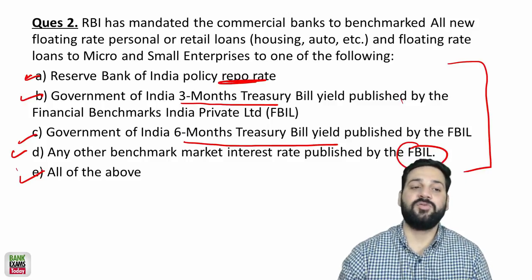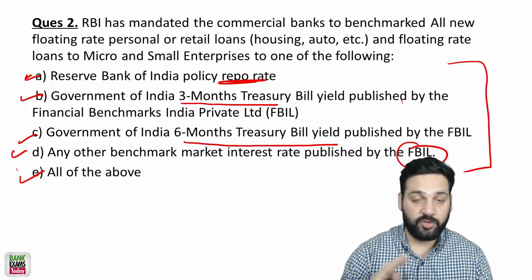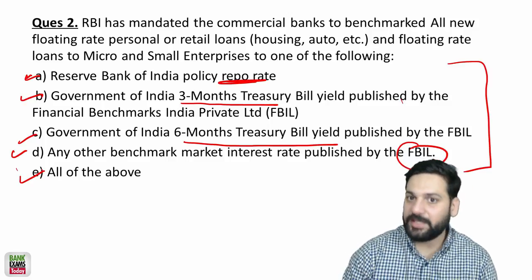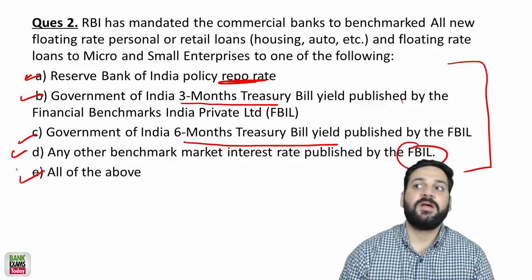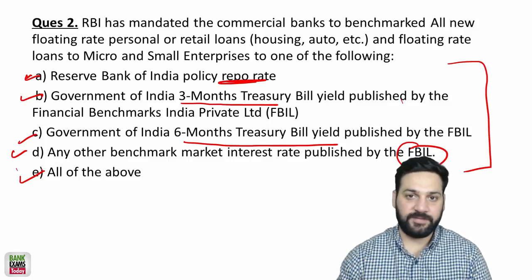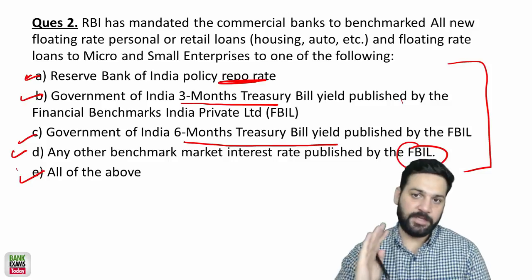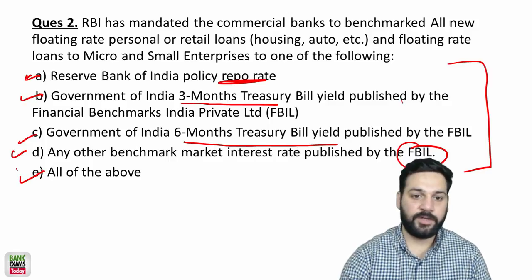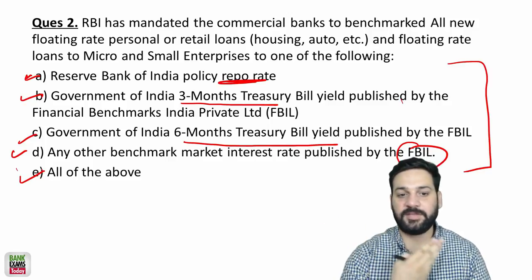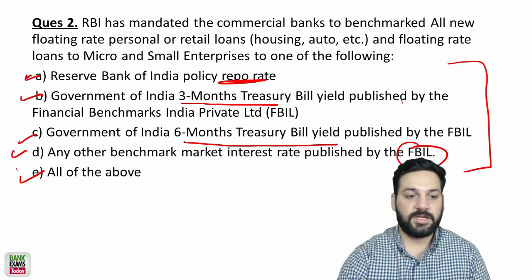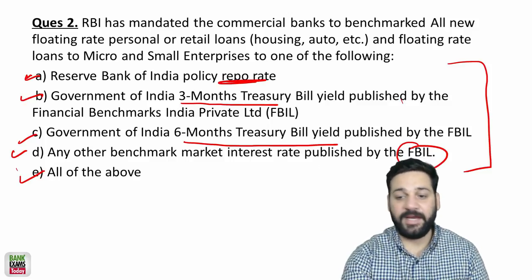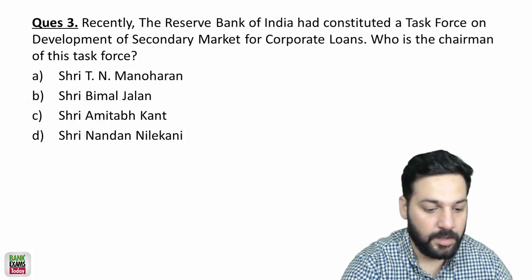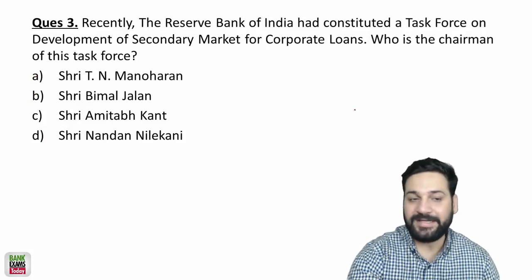Banks can use one of these benchmarks, but they cannot switch from one benchmark to another at the same point in time — once selected, they need to stick with it. The benchmarks are: the repo rate, three-month or six-month T-bill yield, or the benchmark published by FBIL. Recently, RBI also constituted a task force on the development of a secondary market for corporate loans.